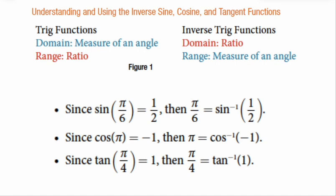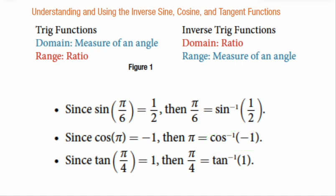We are going backwards on the unit circle. The inverse sine of 1/2: what angle measure on the unit circle gave me that? — π/6. The inverse cosine of negative 1: what angle gives a cosine of negative 1? The inverse tangent of 1: what angle does that? Your answer to an inverse trig function is always an angle measure, and it is customary to give those answers in radian measure unless stated otherwise.